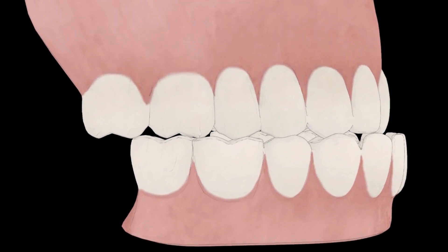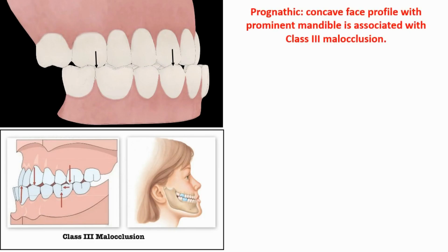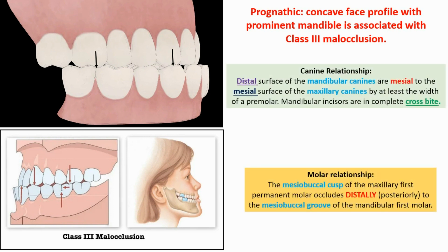The third type of occlusion is Angle Class 3. It is called mesio-occlusion or negative overjet, and is characterized by a concave face profile with a prominent mandible. Molar relationship: the mesiobuccal cusp of the maxillary first permanent molar occludes distally and posteriorly to the mesiobuccal groove of the mandibular first molar. Canine relationship: the distal surface of the mandibular canines is mesial to the mesial surface of the maxillary canines by at least the width of a premolar.